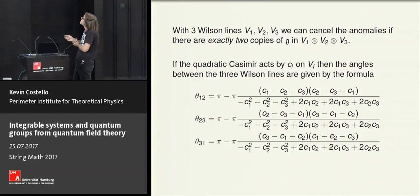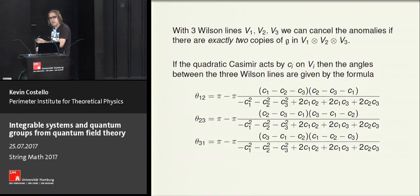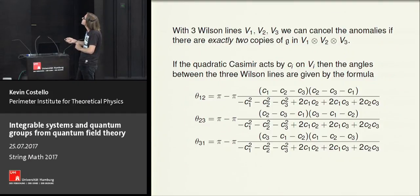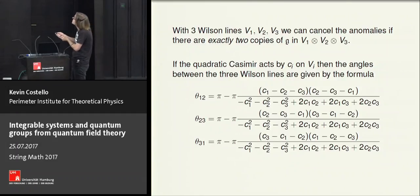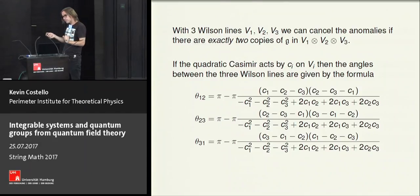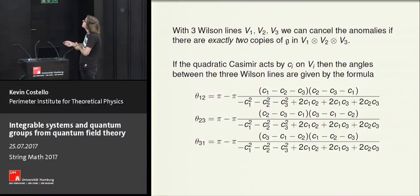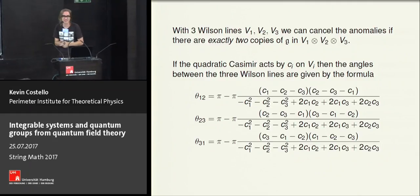Looking back at our formula, we can calculate that the unique solution which cancels the anomalies is given by the following expression. The C_i's are the actions of the quadratic Casimirs on the three representations (assumed irreducible), and assuming these representations themselves lift to representations of the Yangian, the angles θ must be given by this formula involving the quadratic Casimirs.